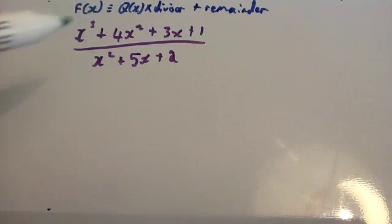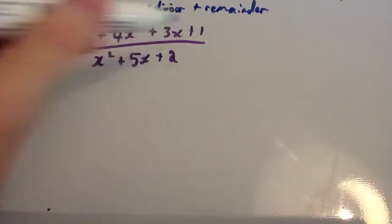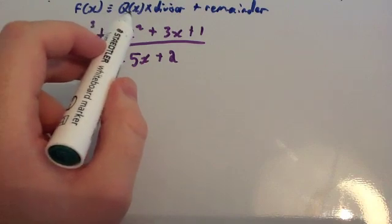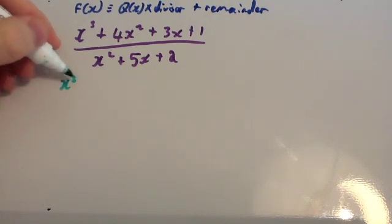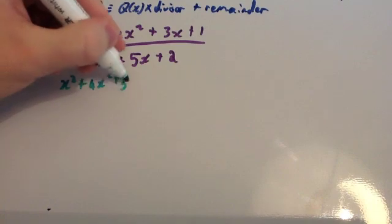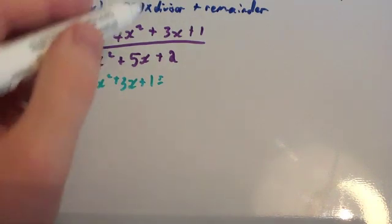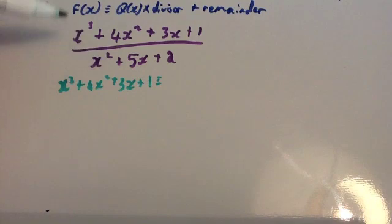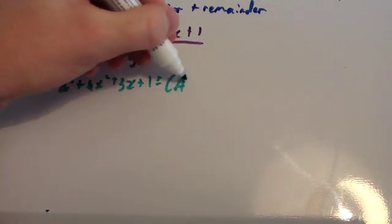We're now going to look at this question and do this division using the remainder theorem. We've got x cubed plus 4x squared plus 3x plus 1 divided by x squared plus 5x plus 2. Let's first write it in the format: f of x is equivalent to the quotient times the divisor plus the remainder. So f of x is what we're dividing. To get the quotient, we divide x cubed by x squared, which gives x. So the quotient is going to be of the form ax plus b.